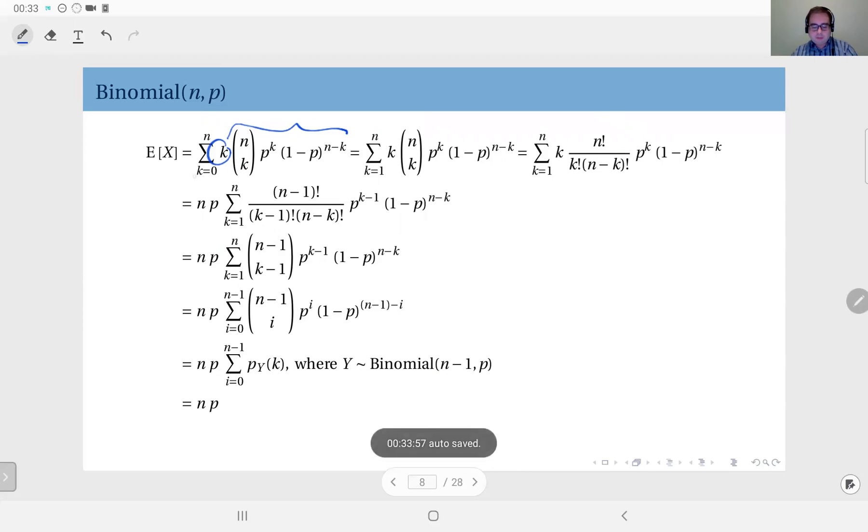And then, let me write the binomial term n choose k as this expression, and then I'm going to cancel out this k with the k in k factorial.